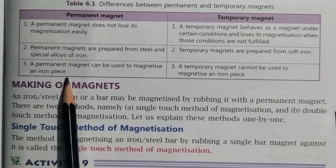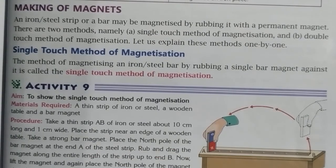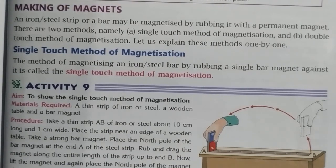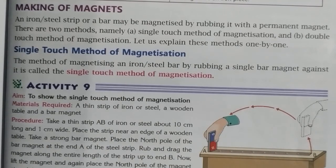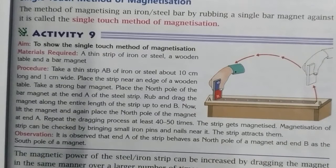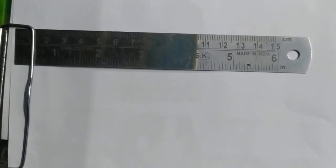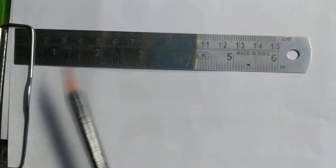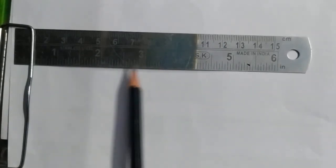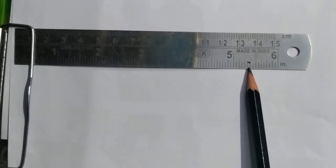Permanent magnets can be used to magnetize an iron piece. We can make magnets by two methods: the single touch method of magnetization and the double touch method of magnetization. Let's see what happens in single touch magnetization, as shown in activity number nine. For single touch magnetization, we require a steel or iron piece — here I have taken a steel scale as an example.